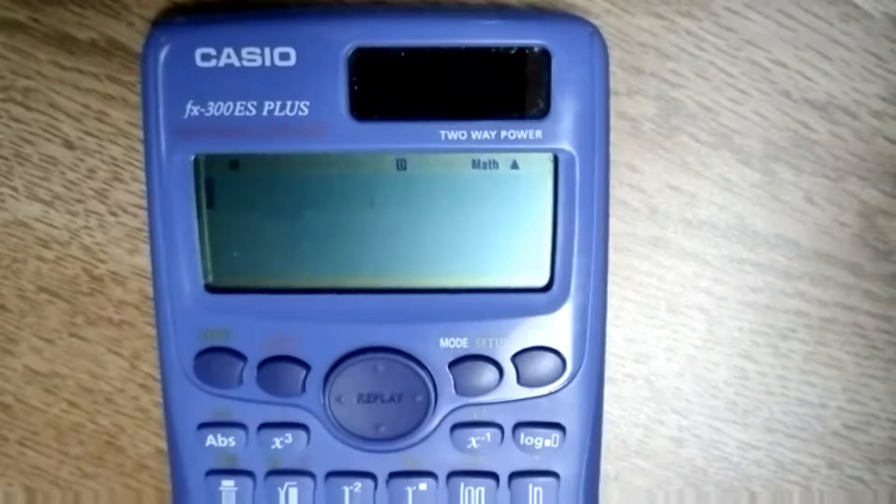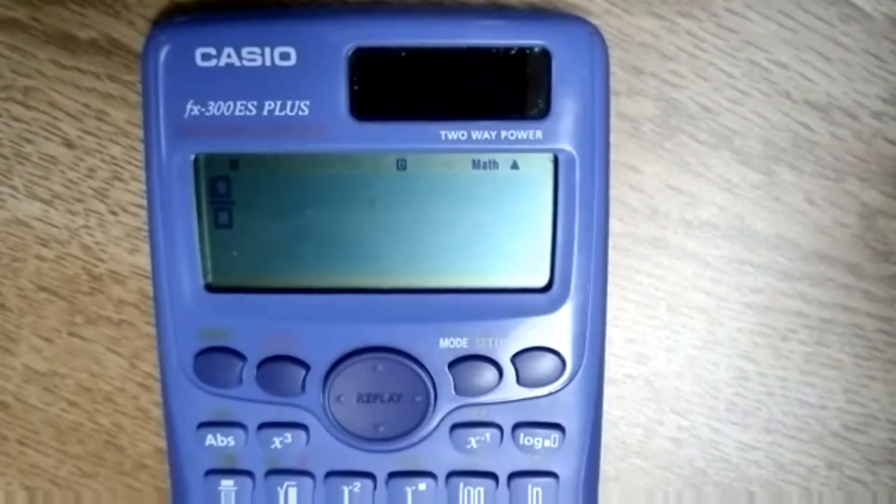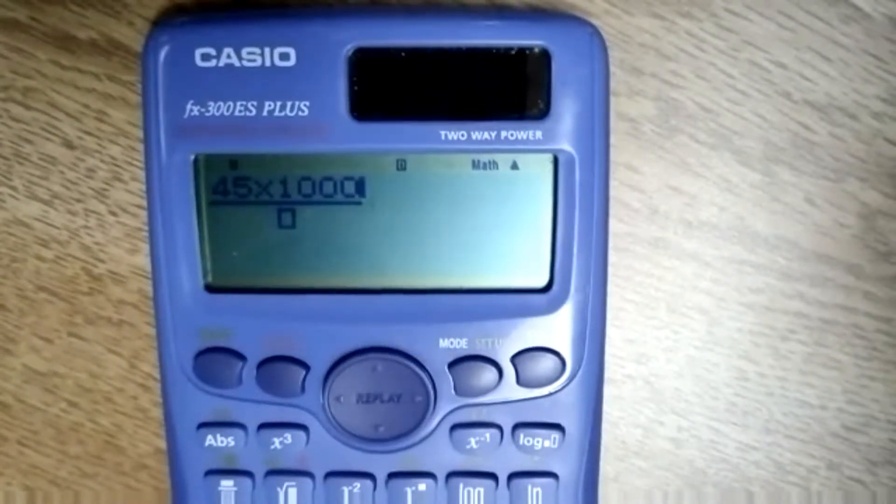And I'll also show you a second method where you can use parentheses. If you click this fraction key and put everything that's in the numerator on top of the fraction bar, so the 45 times 1,000 times 0.55 seconds.